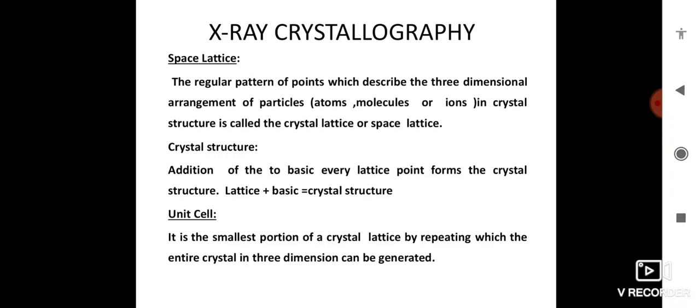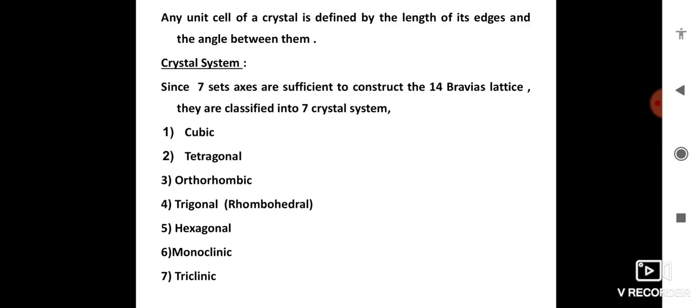Next, Bravais lattice. Here there are different types of lattices possible in which crystal system consists of seven basic crystal systems, 14 Bravais lattices. They are classified into seven crystal systems: cubic, tetragonal, orthorhombic, trigonal, hexagonal, monoclinic, and triclinic.